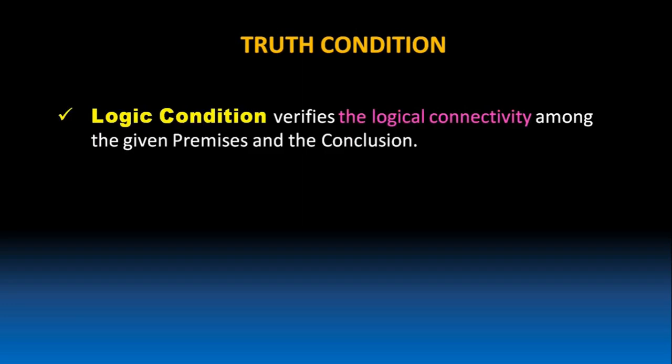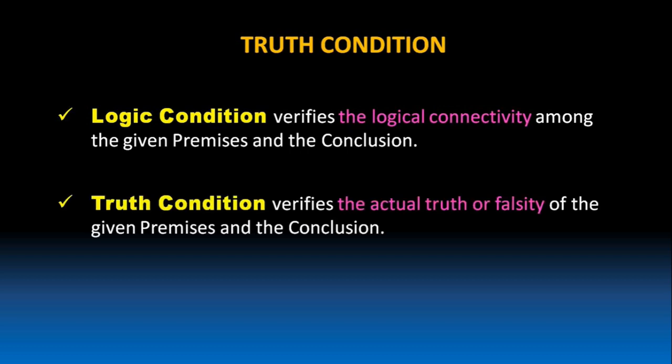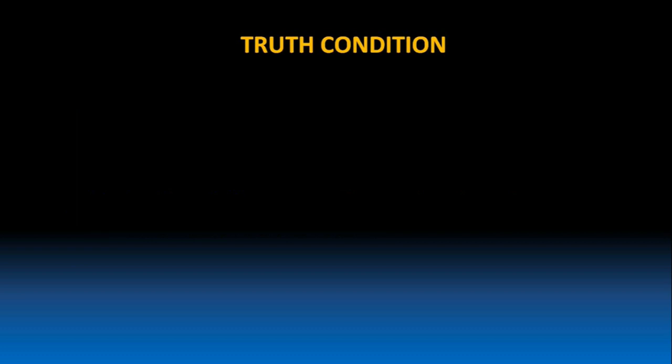Truth condition. In the previous lesson, we have discussed about logic condition. Logic condition verifies the logical connectivity among the given premises and the conclusion. Then what about the truth condition? Truth condition verifies the actual truth or falsity of the given premises and the conclusion. Let's try to understand this with the help of a few examples.